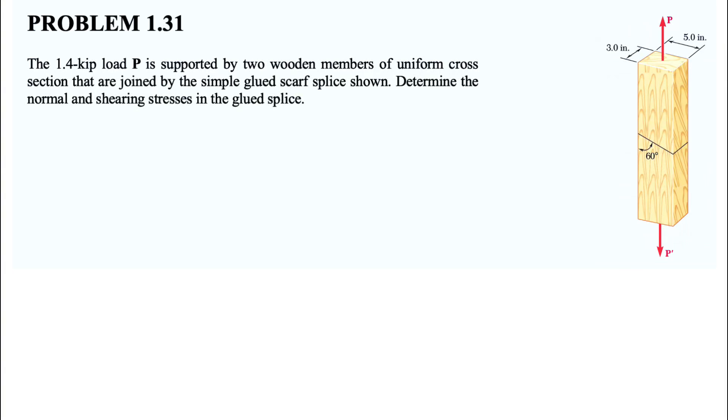All right guys, welcome back to the channel. We're going to be solving question 31 from the first chapter of the Peter and Johnson textbook. We have this 1.4 kip load P that is supported by two wooden members of uniform cross section that are joined by simple glue scarf splice.